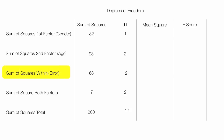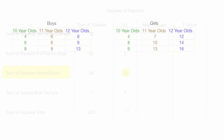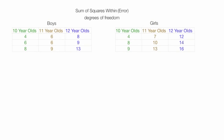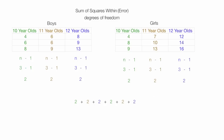The degrees of freedom for the sum of squares within — the error — is a little tricky. I take the number of observations for each age group, n minus 1, which is 3 minus 1, equal to 2, and I do that for each age group. I then add them all up: 2 for the 10-year-old boys, plus 2 for the 11-year-old boys, plus 2 for the 12-year-old boys, plus 2 for the 10-year-old girls, plus 2 for the 11-year-old girls, plus 2 for the 12-year-old girls — this all adds up to 12.